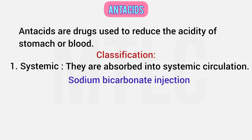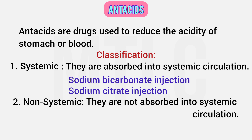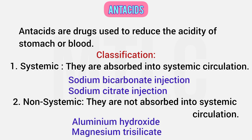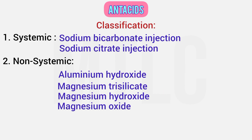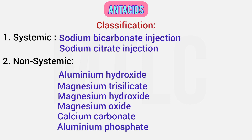Sodium bicarbonate, sodium citrate are systemic antacids. Non-systemic antacids are not absorbed into systemic circulation — they neutralize gastric acid locally. Examples of non-systemic antacids include aluminum hydroxide, magnesium trisilicate, Digene, and Gelusil. Magnesium hydroxide, magnesium oxide, calcium carbonate, and aluminum phosphate are also non-systemic antacids.